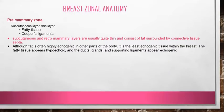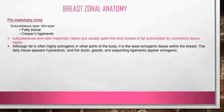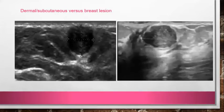The pre-mammary zone is loose connective tissue predominantly containing fat, from which the anterior layer of the superficial fascia arises along with Cooper's ligaments extending posteriorly. Both the pre-mammary and retromammary zones are fatty components. Although fat in the body is generally echogenic, breast fat appears relatively hypoechoic compared to the echogenic fibroglandular stroma. The most anterior subcutaneous fat or pre-mammary zone is where dermal and subcutaneous lesions are typically seen.